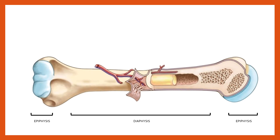The singular is epiphysis, but since there's one at either end, in the plural they are epiphyses. Epiphyses are particularly a feature of long bones — you don't find them in most other bone types. You'll find epiphyses in all the bones of the arm, for example the humerus, radius, and ulna, and all the bones of the leg — the femur, tibia, and fibula.